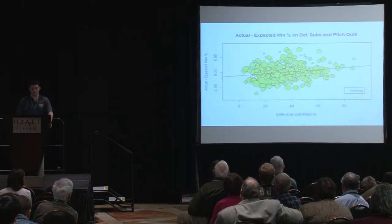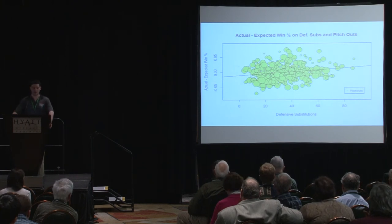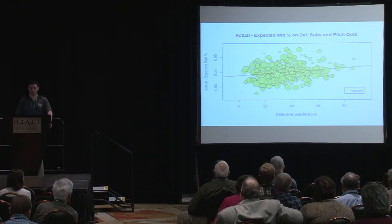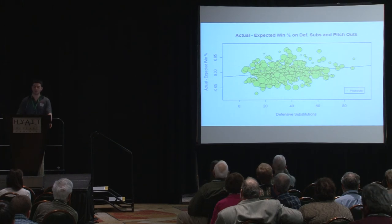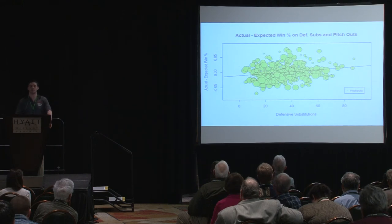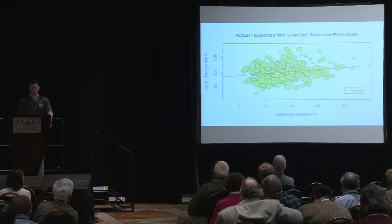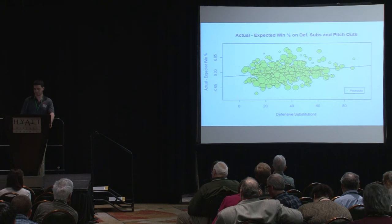This graph shows on the x-axis the defensive substitutions and on the y-axis the actual minus expected win percentage. The size of the circles represents how many pitch outs were ordered. As you look to the right of the graph, a lot of the green circles are smaller, as those teams are using fewer pitch outs. Looking towards the left and the bottom, there are more large green circles, indicating those teams are using more pitch outs.